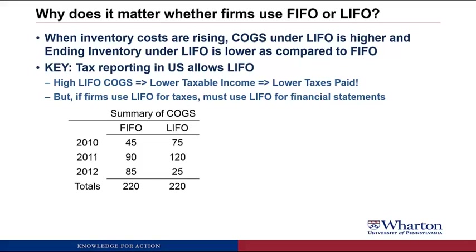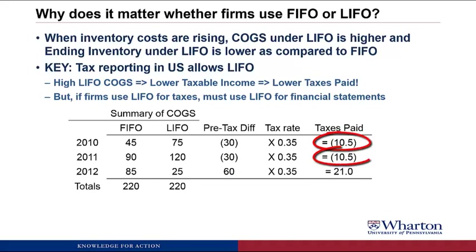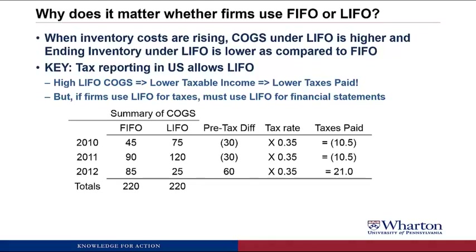To show how big a deal this could be: in 2010 and 2011, LIFO gave you lower pre-tax income by $30 each year, and then higher pre-tax income in 2012. In the US, the tax rate is 35%, so in 2010 and 2011, you would save $10.50 in taxes each year. But then in 2012, you'd have to pay an extra $21 in taxes under LIFO — it all cancels out over three years. The key is that a dollar today is always worth more than a dollar in the future. You always want to save taxes today and be willing to pay taxes in the future because the value of what you save today is worth more than what you'll pay later.